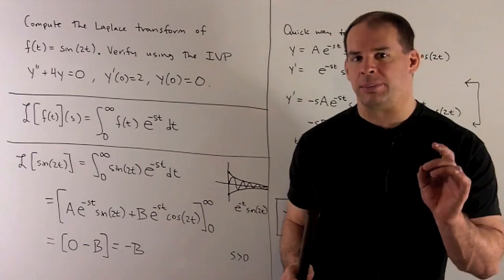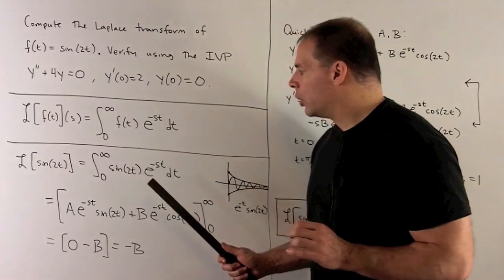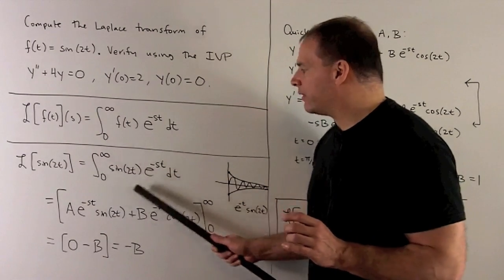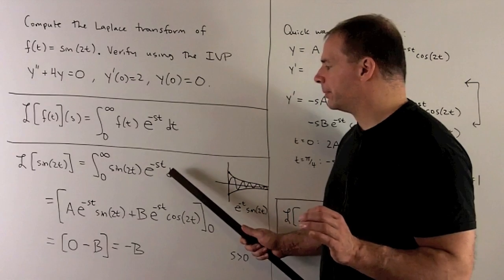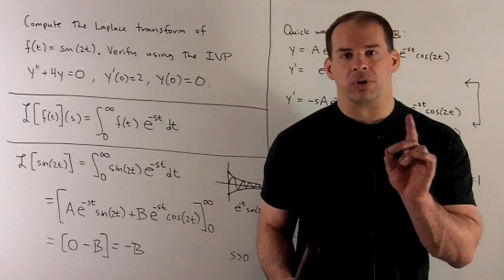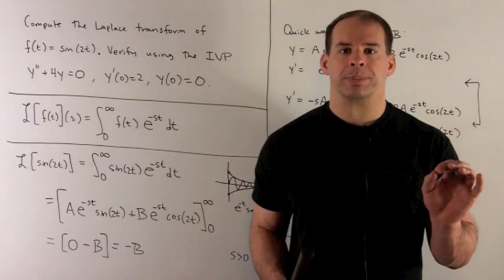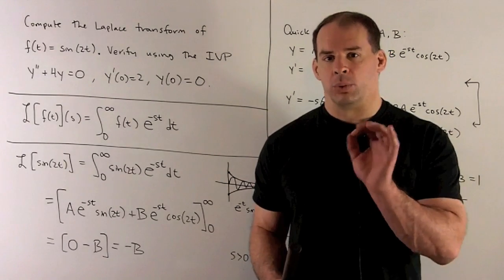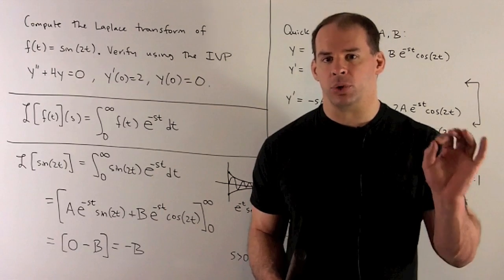If we let f(t) be equal to sine of 2t, what happens? We're going to need to find an antiderivative of sine of 2t, e to the minus st. There's a few ways you can get that. This is not a calculus class, so you could go look it up. Or, if you want to work it out, it's going to be two integration by parts if you do it the usual way.